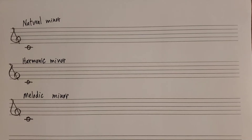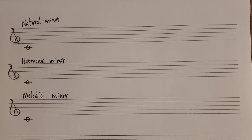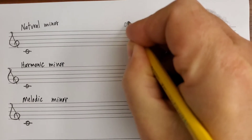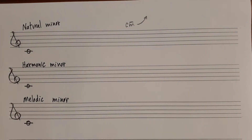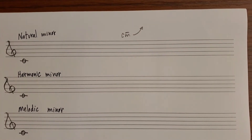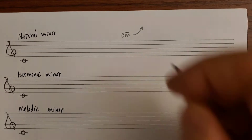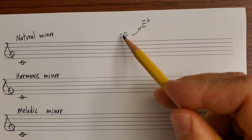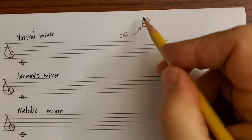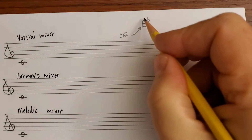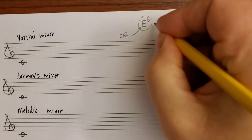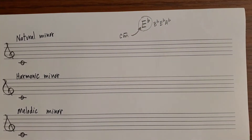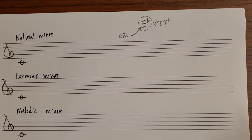To spell C minor, the first thing you want to think about is the relative major. Think up three half steps from C to find it: C to C sharp is one half step, to D is two, and E flat is three. Remember it has to be spelled as a third, so if we start on C it will be some kind of E. Relative keys have the same key signature, so think of the key signature of E flat major: B flat, E flat, and A flat — three flats. So C minor also has three flats.